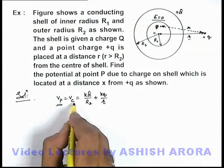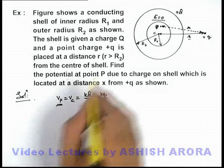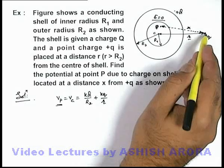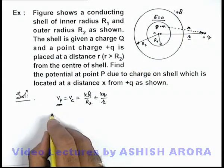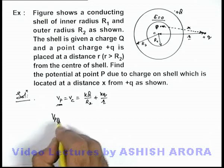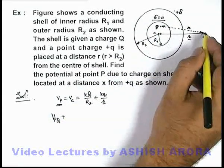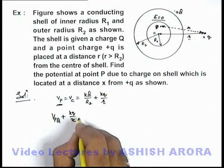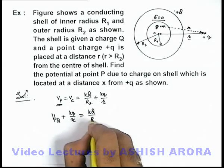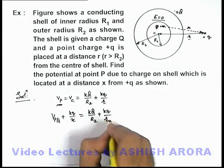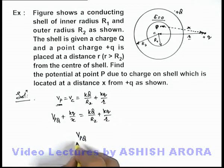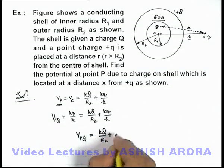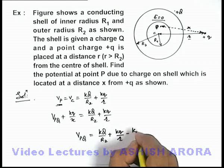This is the net potential at point P or C. At point P, the potential has contributions due to the shell charge as well as the point charge +q. So the potential at point P equals the potential due to shell charge q plus the potential due to charge +q at distance x, which is kq/x. Setting this equal to kq/r₂ + kq/r, the potential at point P due to the charge on the outer surface of the shell is: kq/r₂ + kq/r − kq/x. This is the answer to the problem.